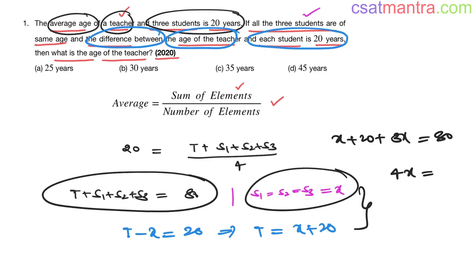4x is equal to 80 minus 20, which is 60. x is equal to 15, so 60 divided by 4 is 15. So each student is 15 years old. Teacher, 15 plus 20, that is 35 years.